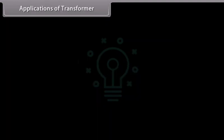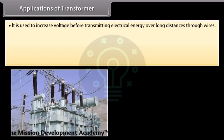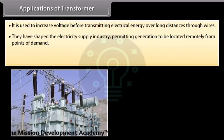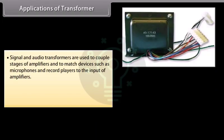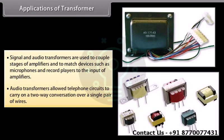Applications of transformer. It is used to increase voltage before transmitting electrical energy over long distances through wires. Transformers have shaped the electricity supply industry, permitting generation to be located remotely from points of demand. They are also used extensively in electronic products to step down the supply voltage to a level suitable for low voltage circuits. Signal and audio transformers are used to couple stages of amplifiers and to match devices such as microphones and record players to the input of amplifiers. Audio transformers allowed telephone circuits to carry on a two-way conversation over a single pair of wires.